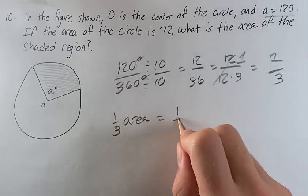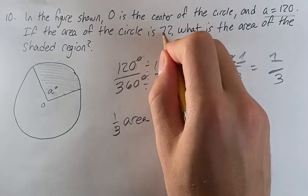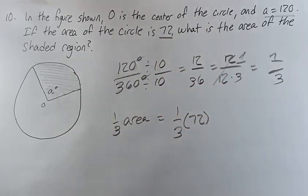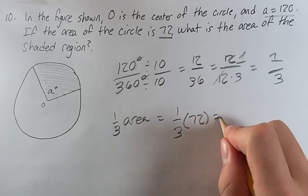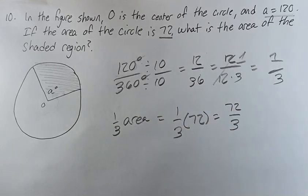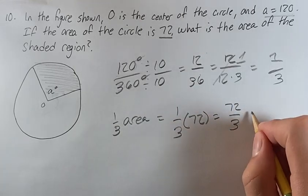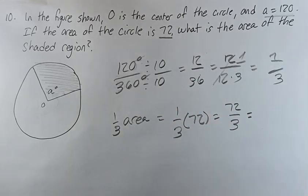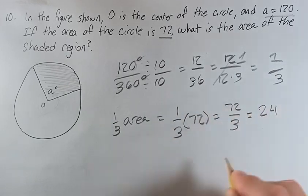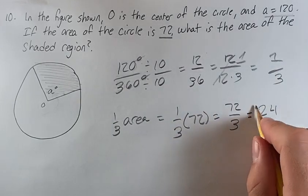It's given that the area of the circle is 72. So we're taking 1 third of 72, or 72 divided by 3. You can calculate this by hand, but just know that this is 24, which is the area of the shaded region and the answer to the problem.